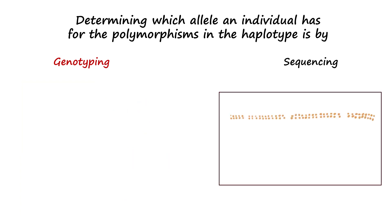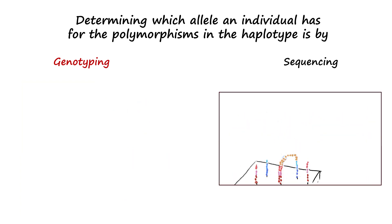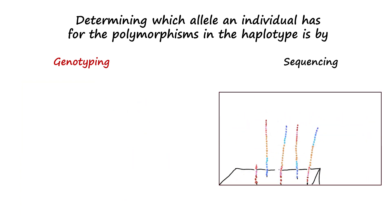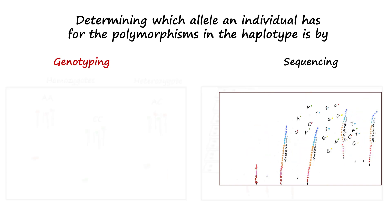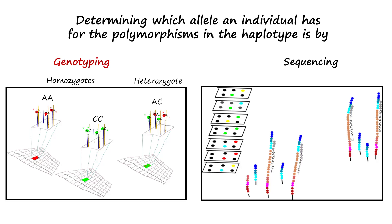Sequencing or finding the nucleotides at each position along the DNA sequence, though it reveals the genotypes at the polymorphic loci, is less commonly used because it is currently more expensive.